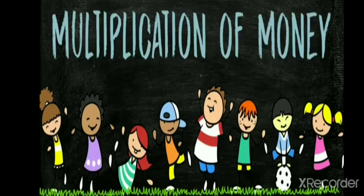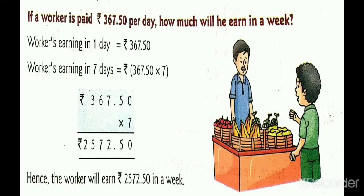Now let's learn multiplication of money. The question: if a worker is paid rupees 367.50 per day, how much will he earn in a week? A worker earns rupees 367.50 in one day, so multiply this amount by 7 for seven days. Hence the worker will earn rupees 2572.50 in a week, which can be read as 2572 rupees and 50 paise.